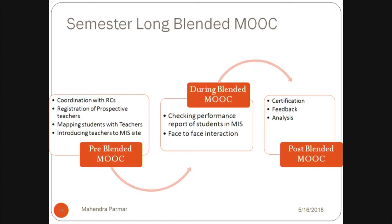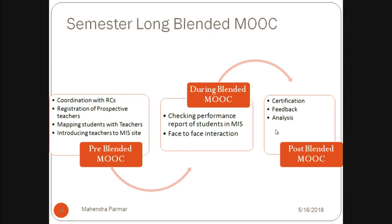The flowchart for the blended MOOC process: before the blended MOOC, we coordinate with remote centres, do their registration, map students with teachers so teachers can see how many students are in their group, and introduce teachers to the MIS site. During the blended MOOC, we have face-to-face interaction where students can ask queries to IIT Bombay faculty. After the blended MOOC, we give certificates, take feedback from students and teachers, and do analysis.